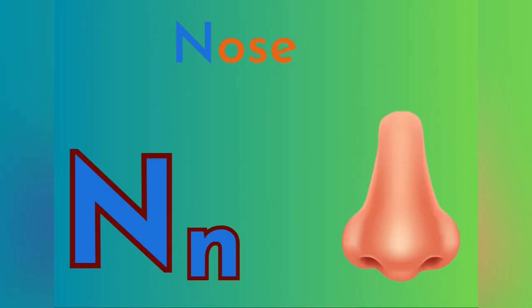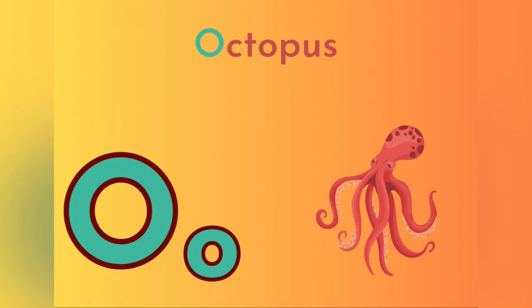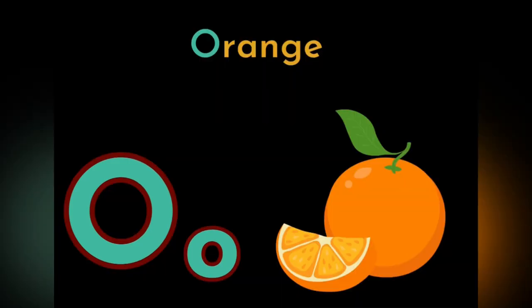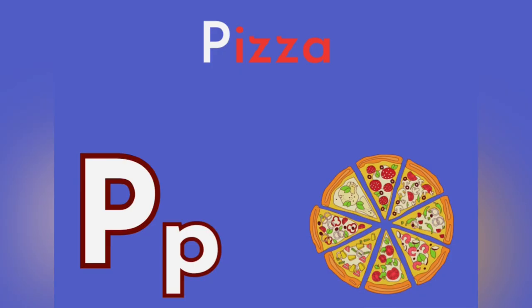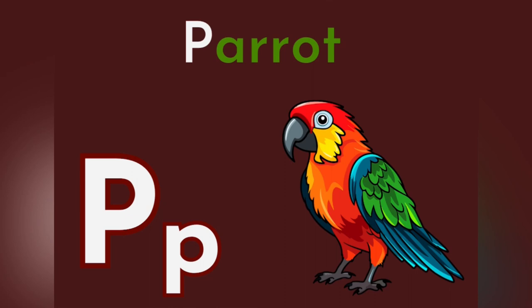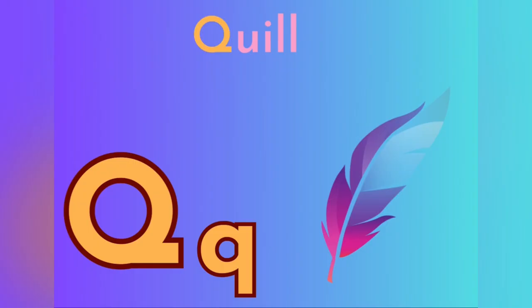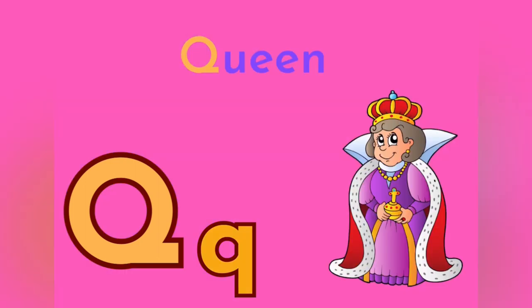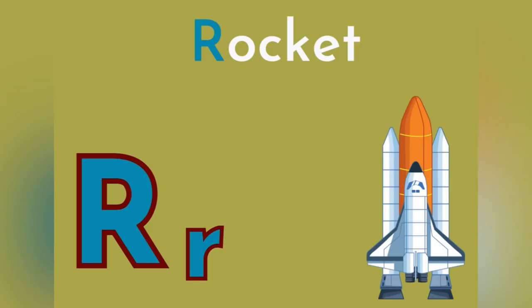O for Octopus. P for Pizza. P for Parrot. Q for Quill. Q for Queen. R for Rocket.